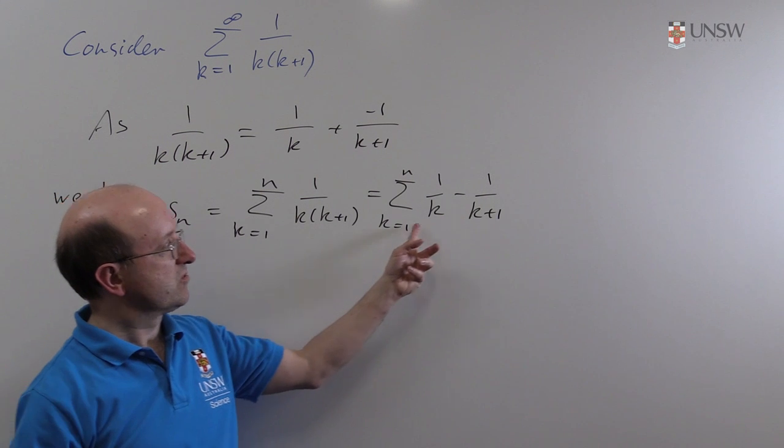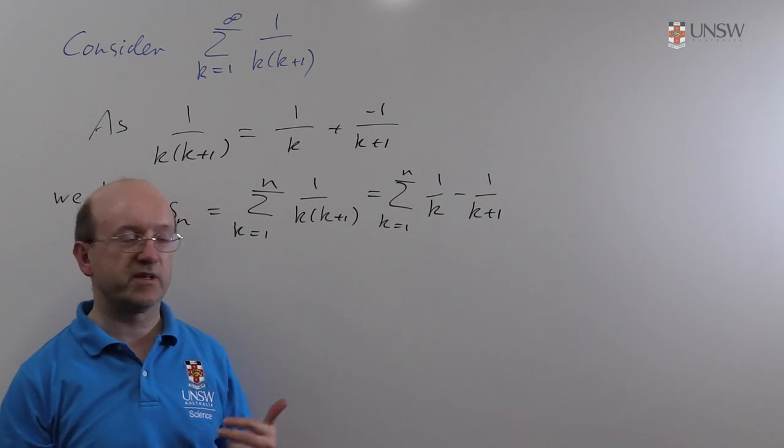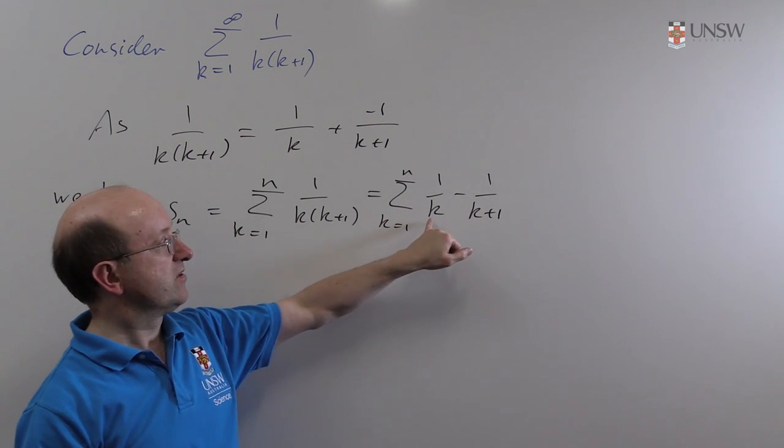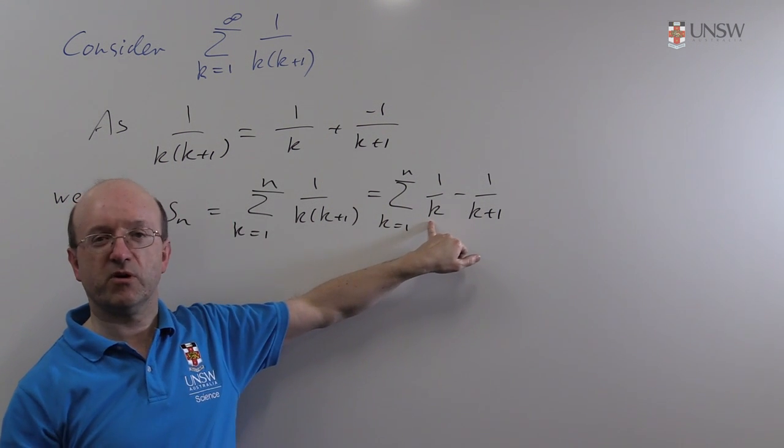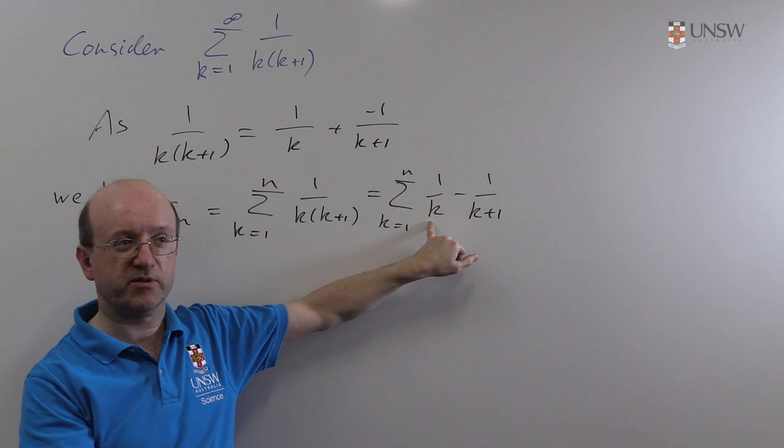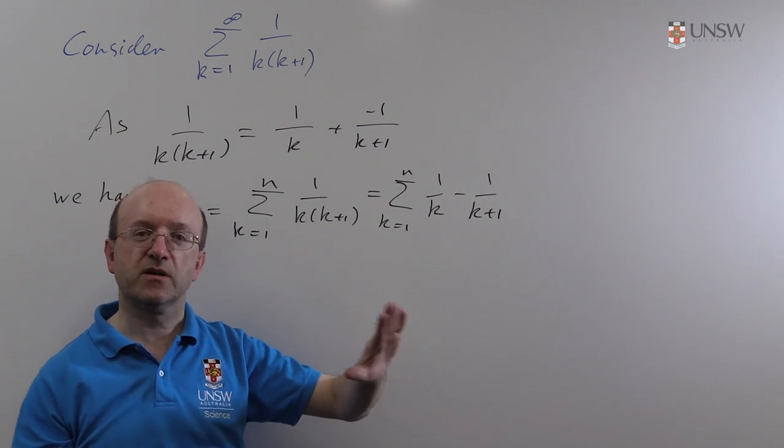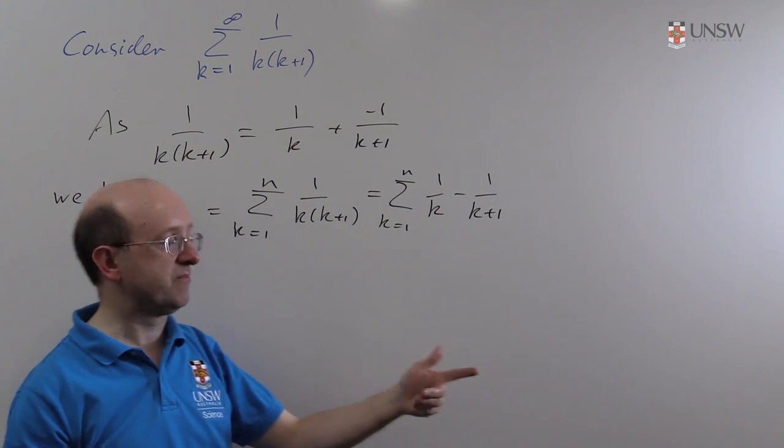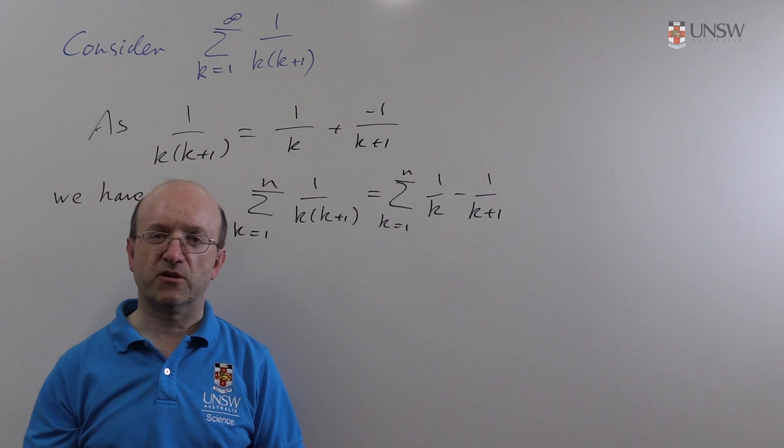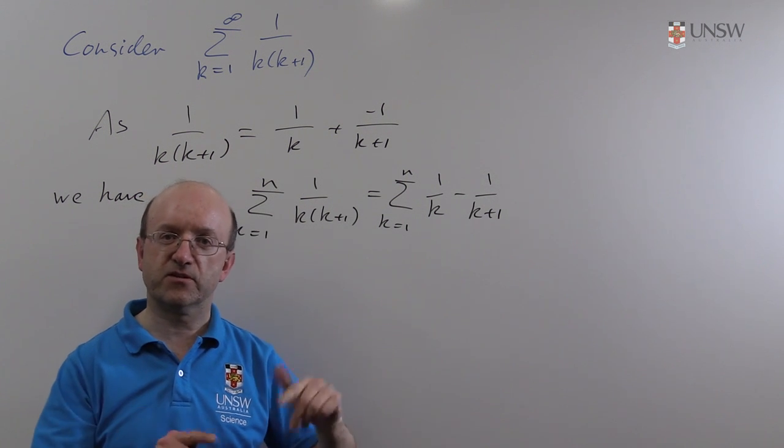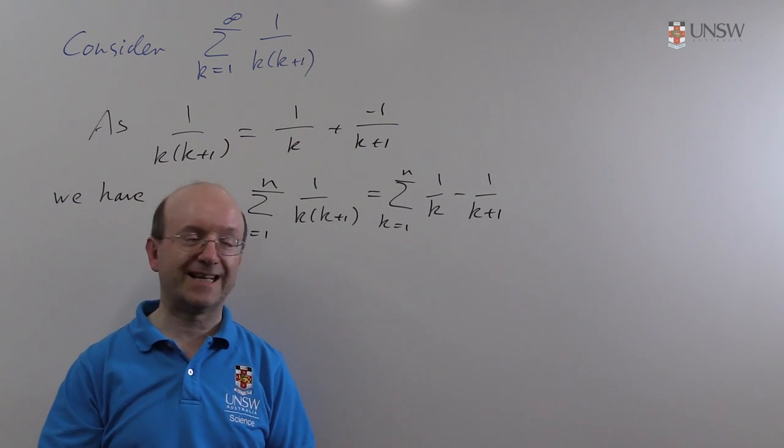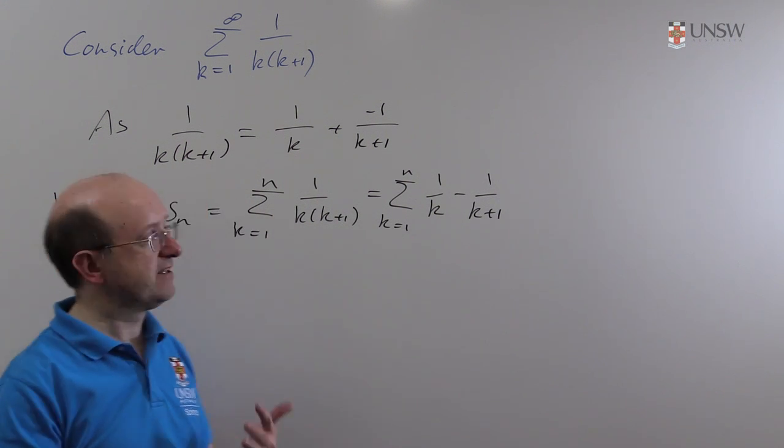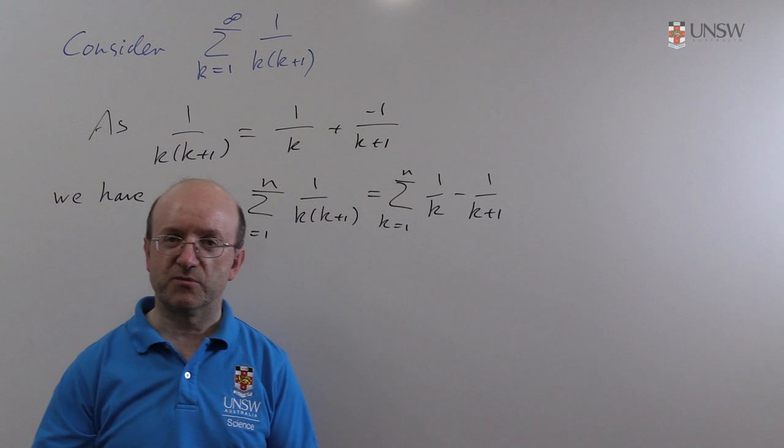equals 1 over k minus 1 over k plus 1. So now what's going to happen is these terms are going to cancel off. You could write it out this way. This is 1 over 1 plus 1 over 2 plus 1 over 3 up to 1 over n minus 1 over 2 plus 1 over 3 up to 1 over n plus 1. So all the terms in the middle cancel off. We're just left with the first term and the last term.